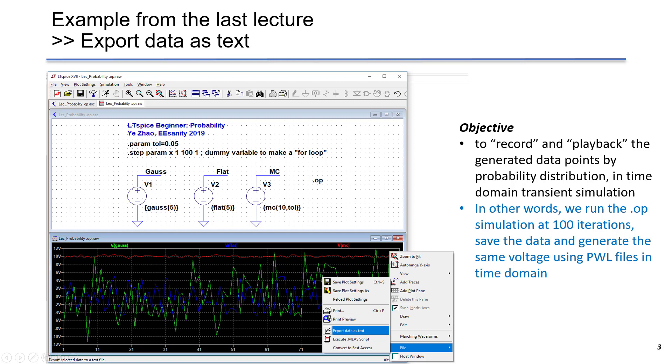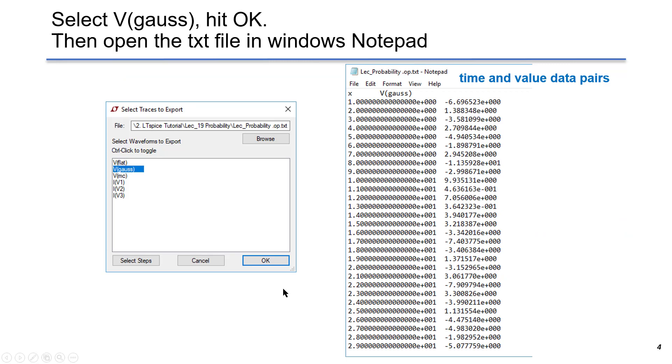To export the data, we go to the plot window, right click, choose file, and then we choose export data as text. We select voltage of Gaussian and hit OK. Then we can open the text file in Windows Notepad.